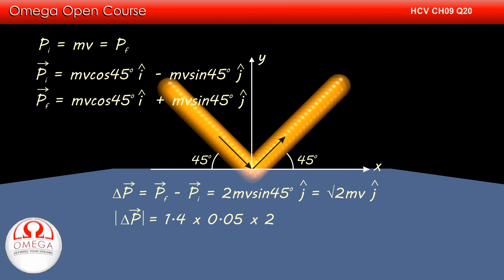Putting root 2 is equal to 1.4 and the value of m and v, we get the magnitude of change in momentum vector is equal to 1.4 into 0.05 into 2 or 0.14 kg meter per second. This is answer to part A of the question.